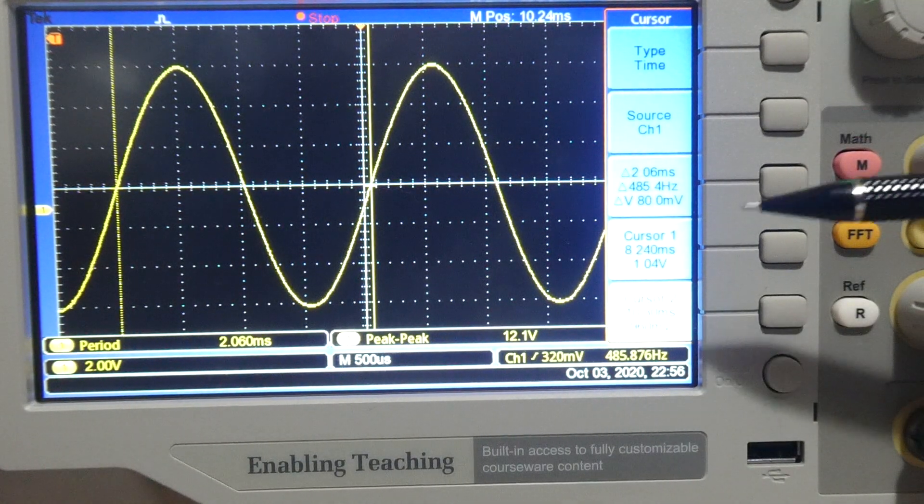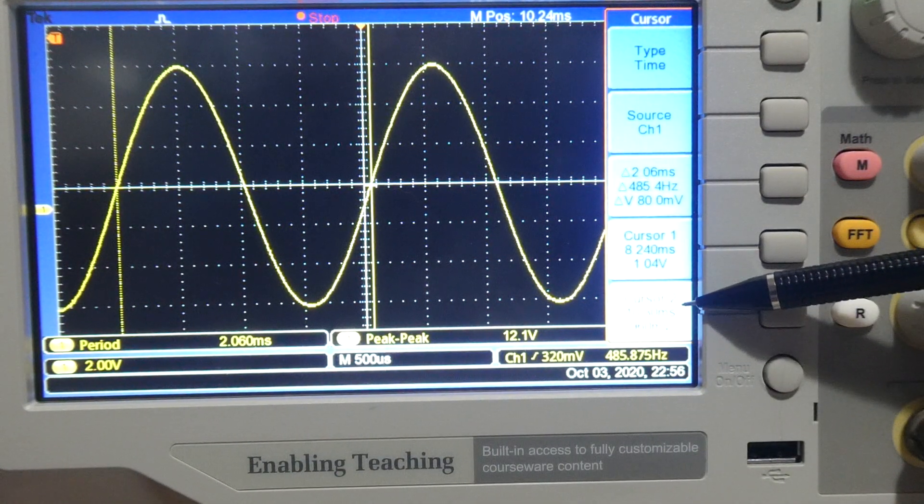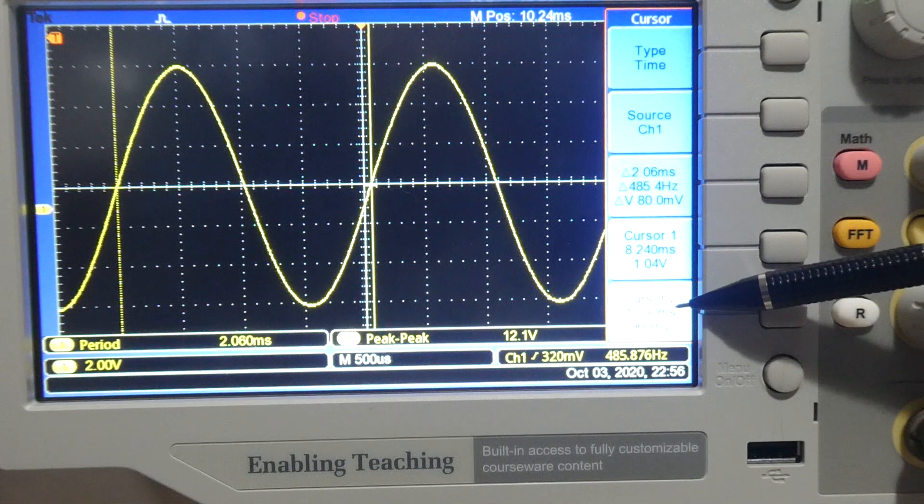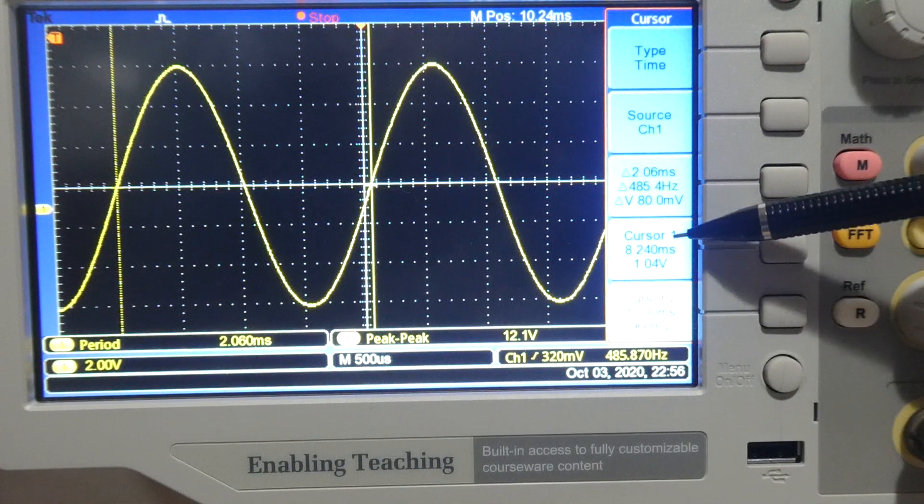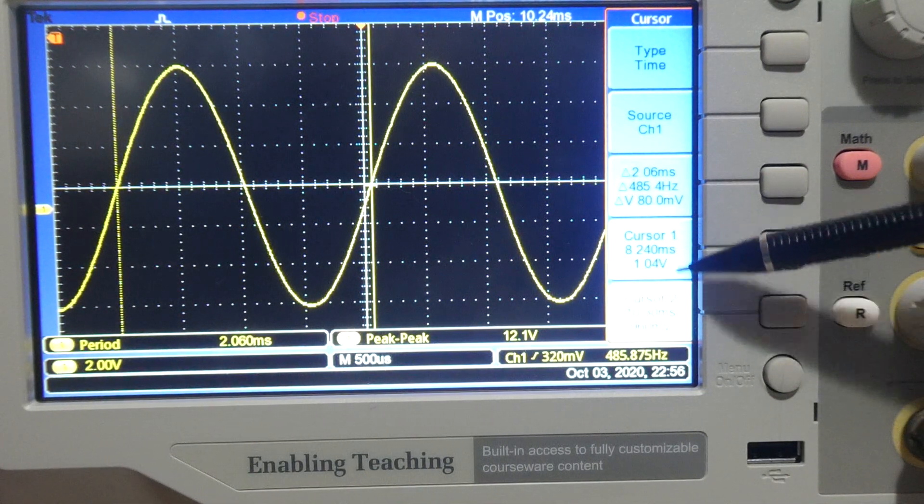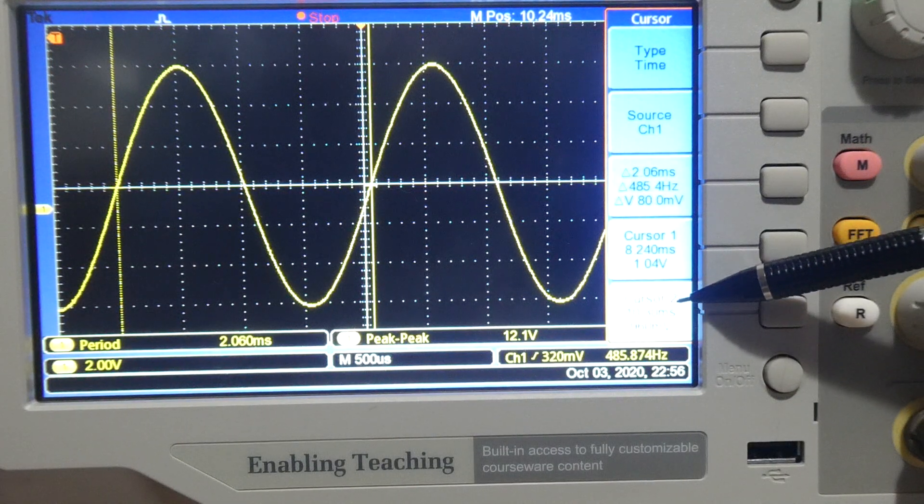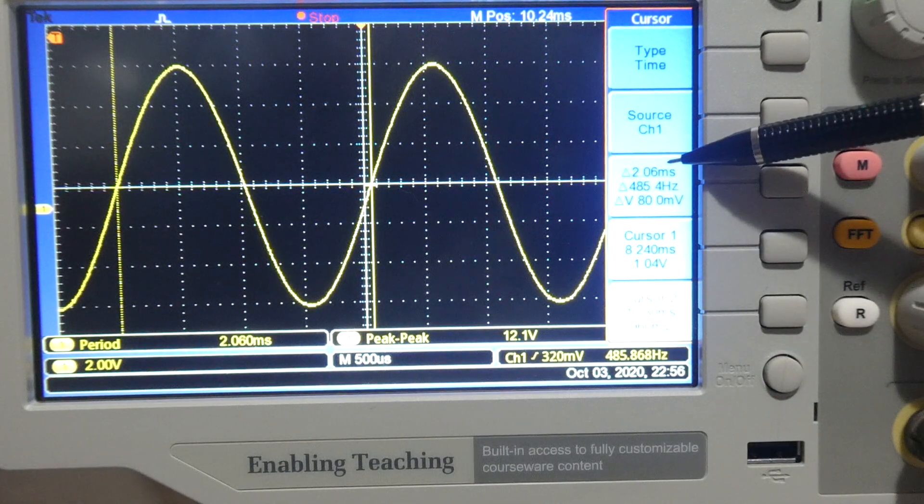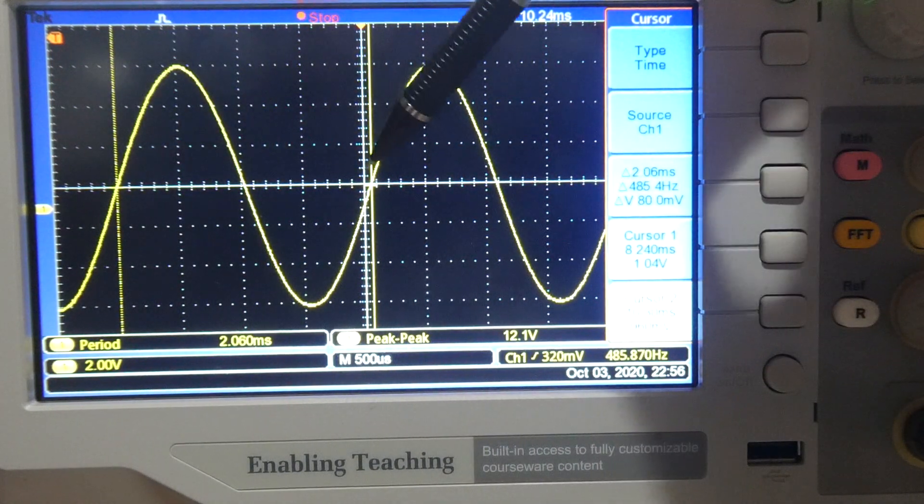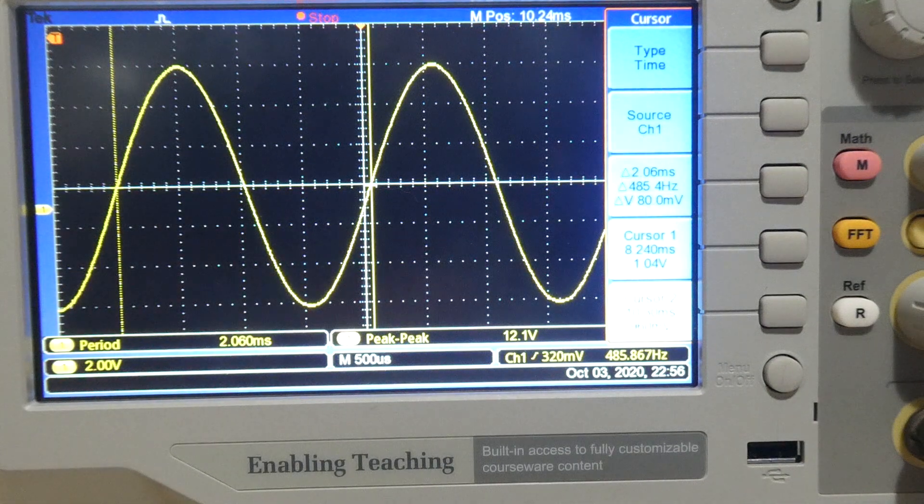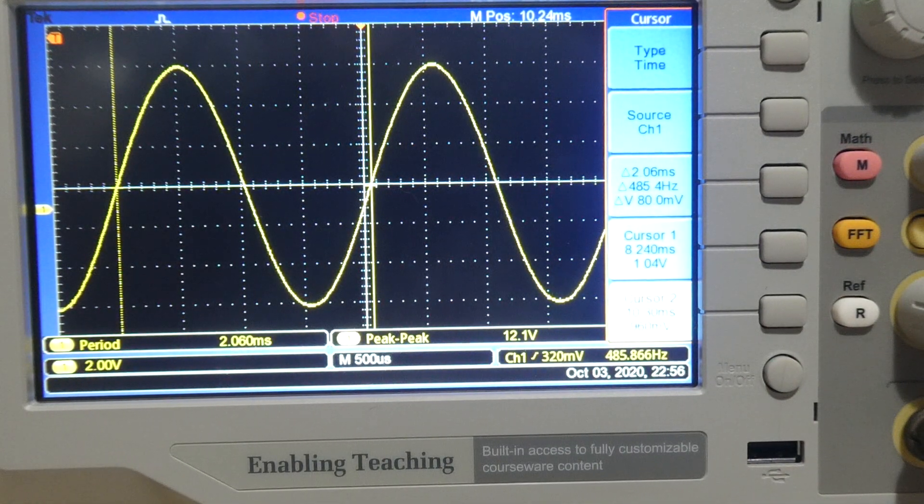So now we can see that we have a period going from 8.2 milliseconds to 10.3 milliseconds. That's just over 2 milliseconds of period, and 2.06 milliseconds is what the scope is telling me that value is. So that's measuring using cursors on a sine wave.